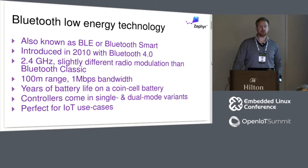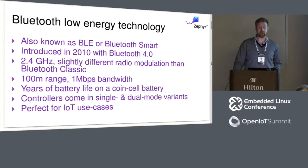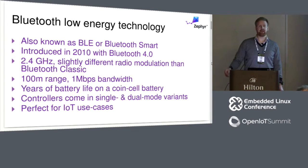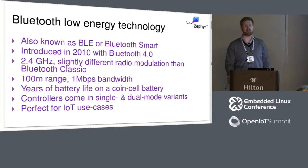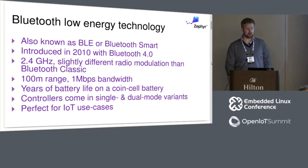Devices supporting Bluetooth Low Energy are generally categorized into two different types. One is pure Bluetooth Low Energy devices, so-called single mode devices, that only have the Low Energy radio — typically sensors like a heart rate belt. The other type also supports Bluetooth Classic, so-called dual mode devices, which you would find on a PC or mobile phone. Bluetooth Low Energy is perfect for Internet of Things use cases, as I'll try to outline throughout this presentation.